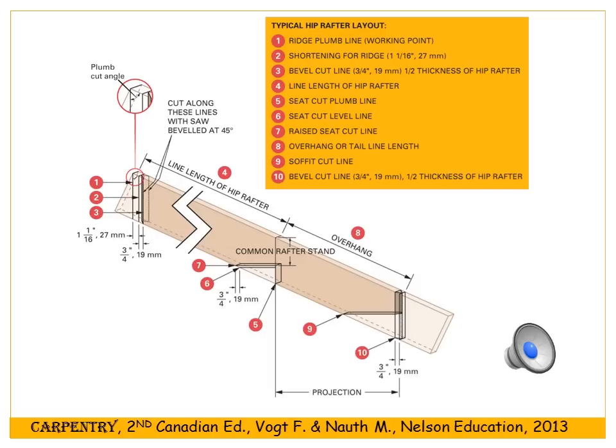This is another diagram in color explaining how to make the cuts for the rafter. You can follow along carefully. In the middle of the rafter there's a jagged line that simply represents a cut so it could fit on the page, but you'll see exactly the same numbers as before.